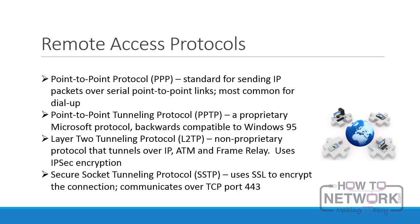Secure Socket Tunneling Protocol, SSTP, uses HTTP over SSL and encapsulates the IP packet with a PPP header, then with an SSTP header. The IP packet, PPP header, and SSTP header are then encrypted in an SSL session. SSTP has the added benefit of using TCP port 443 since it is using SSL, and therefore you will not run into issues of a network firewall blocking the port that you are attempting to VPN over, which is not an uncommon event with some other VPN protocols.